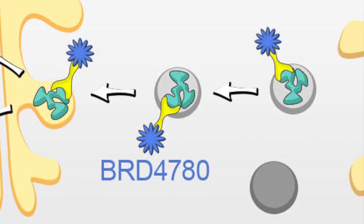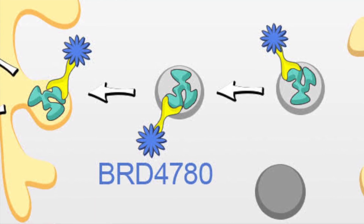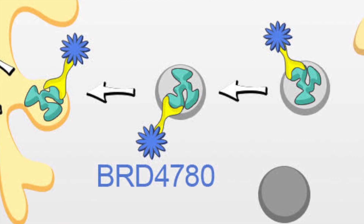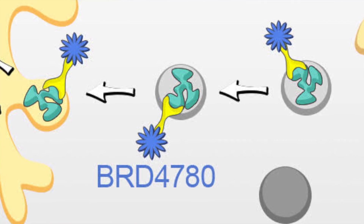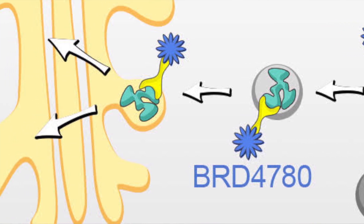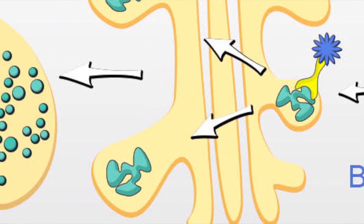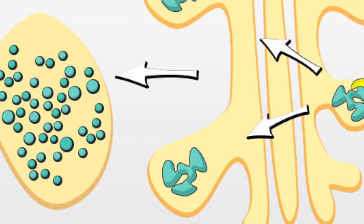BRD4780 physically binds the cargo receptor TMED9. By this binding, the mutant frameshift MUC1 protein is released from the vesicles and can be moved forward along the secretory pathway, eventually getting into the lysosome where it is degraded and removed from the cells. The mechanism by which a misfolded protein is trapped together with the cargo receptor TMED9 is a novel mechanism of action for retention of misfolded proteins.